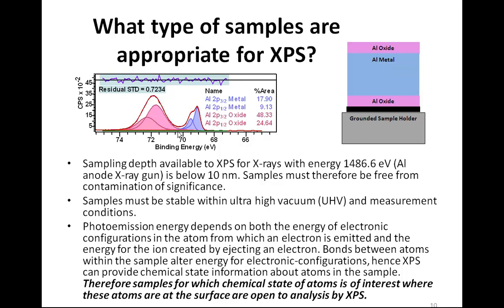XPS is a powerful technique for looking at the outermost part of a sample. Although this sample may contain oxide at the top and bottom of the foil, because of the sampling depth, we know we are only looking at the top part. None of the aluminium oxide further below appears as a photoelectron peak in the data, because it is more than 10 nanometers below the surface being analyzed. XPS is therefore capable of focusing on interfaces and working out the chemical state for material in those interfaces.